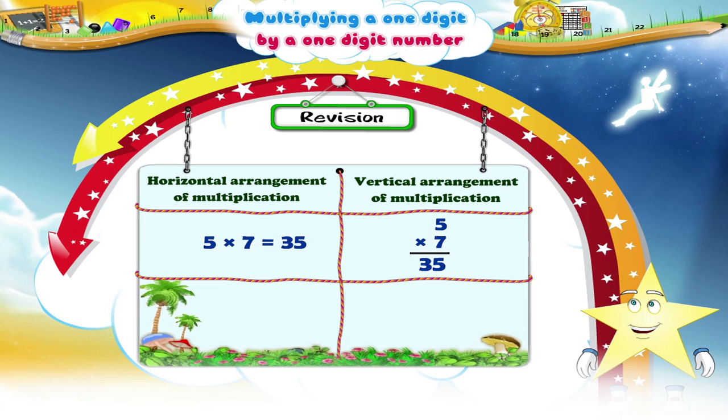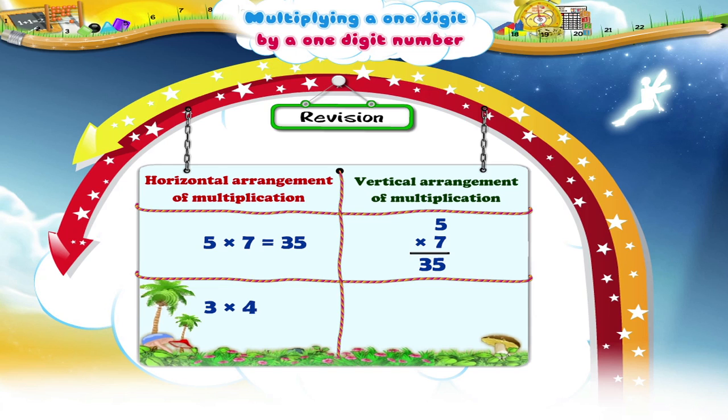One is the horizontal arrangement as is seen when you write your tables. So three fours are twelve is written as three multiplied by four equals twelve. The same digits when written in the vertical arrangement will be three multiplied by four equals twelve.